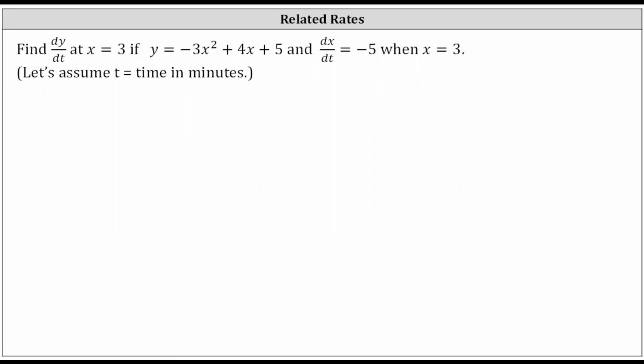We're asked to find dy/dt at x equals three if y equals negative three x squared plus four x plus five and dx/dt equals negative five when x equals three. And just to have some meaning here, we will assume t is time in minutes.